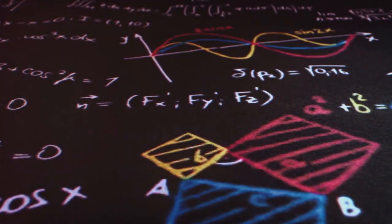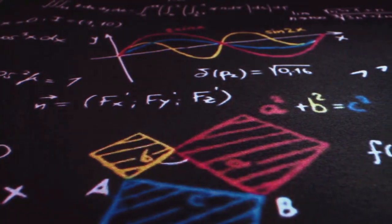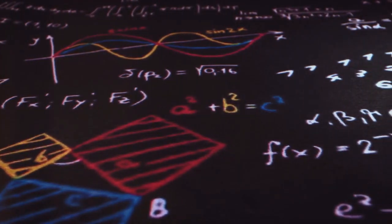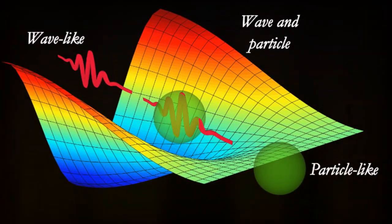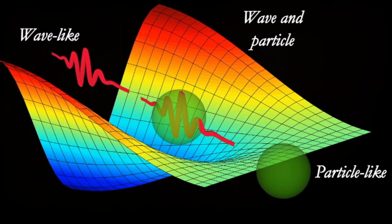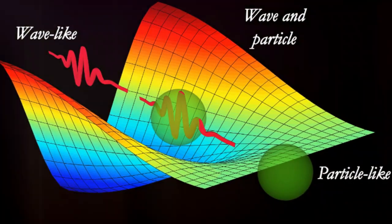Conversely, when we try to define a particle's momentum very precisely, wave-like behavior, its position becomes more spread out, particle-like behavior. This interplay between wave-like and particle-like nature imposes a fundamental limit on our ability to simultaneously know both position and momentum.